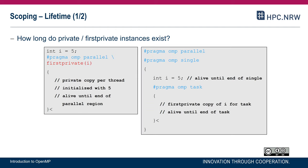Let me add remarks on the lifetime of private or firstprivate variables. Starting with the parallel region: we have a parallel region with the firstprivate clause, and i has been declared before the parallel region with a value of five. Firstprivate at the parallel region means we have one private copy per thread, and each private copy is initialized with five. The private copies are destroyed at the very end of the parallel region. After the parallel region there is only the original i. If you modify i within the parallel region, you only modify the private firstprivate instances, so afterwards the original i — the corresponding i in OpenMP terms — still has a value of five.